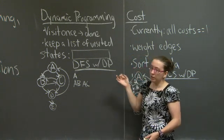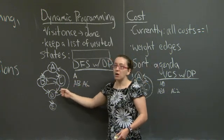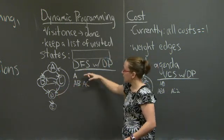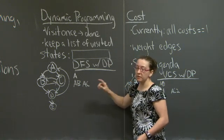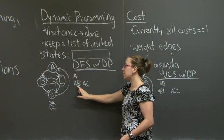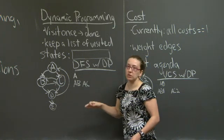I'm going to demonstrate dynamic programming by running depth first search on our state transition diagram from last time. The first two steps are the same, except for the fact that we're going to keep track of the fact that we've visited both A, B, and C as a consequence of the first two iterations of search.